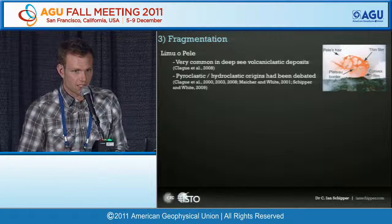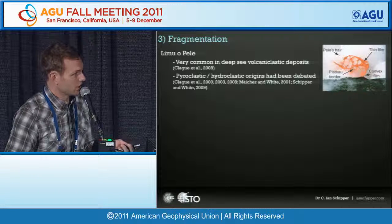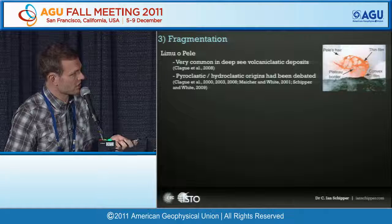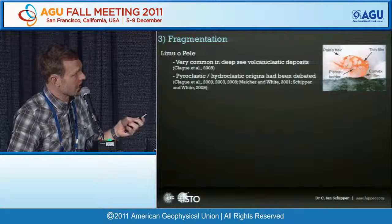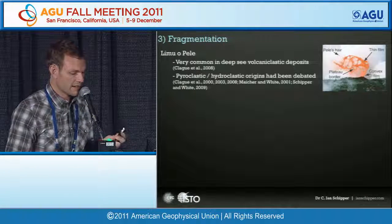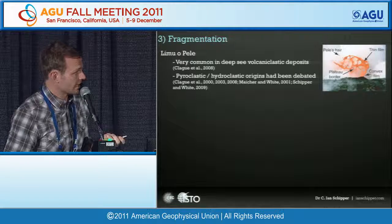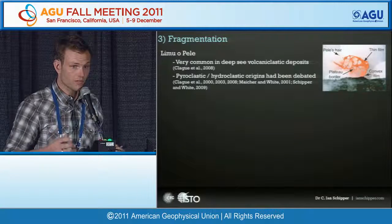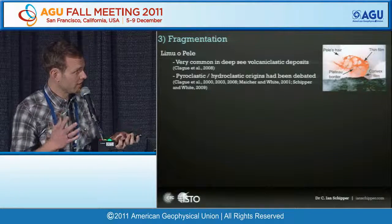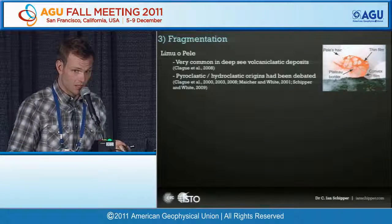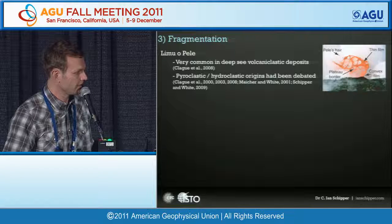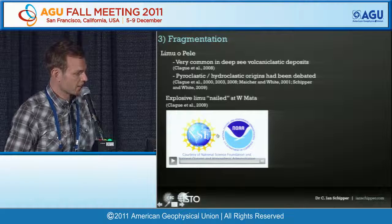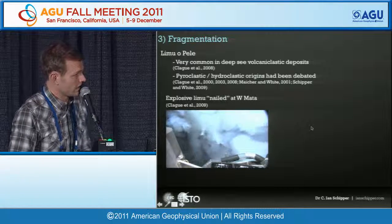I'd be remiss not to talk about Limu o Pele — the beautiful delicate glass shards originally described from the coastline of Kilauea, where lava flow entraps water and vapor rises to form large isolated bubbles that burst, preserving these walls. They're very common in deep-sea volcanic clastic deposits. Their origin has been debated: are they created by pyroclastic activity driven by exsolved magmatic volatiles, or do they have a hydroclastic origin where melt entraps external water and vaporizes it? This debate continued until observations at West Mata nailed the explosive origin of Limu o Pele.